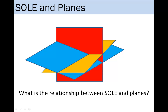In the previous section, we saw that a system of linear equations can have exactly one solution, infinitely many solutions, or no solution. In this section, let us see how planes can come into play in the system of linear equations.